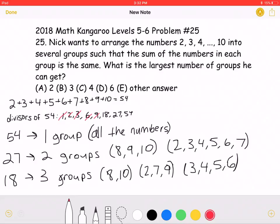If the sum of the numbers in each group is 18, then we would have three groups: (8, 10), (2, 7, 9), and (3, 4, 5, 6).